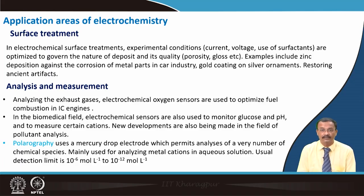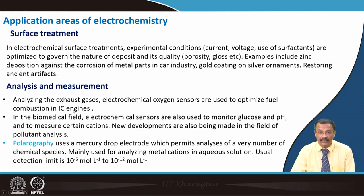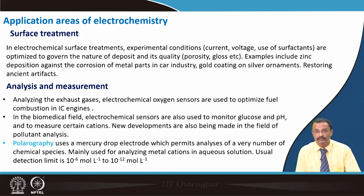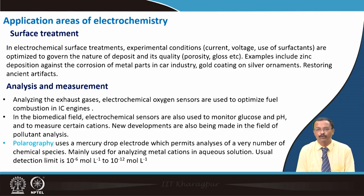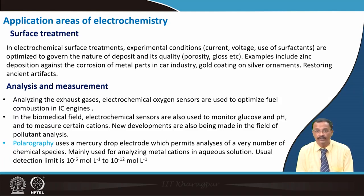Electrochemistry is also useful for various types of analysis and measurements. One example is exhaust gas analysis — it is important to know the oxygen content to determine whether petrol has been fully combusted. To optimize fuel efficiency in the IC engine, we use an oxygen sensor. In the biomedical field, electrochemical sensors are used to monitor glucose and pH, measure certain cations, and new developments are being made to identify pollutants.